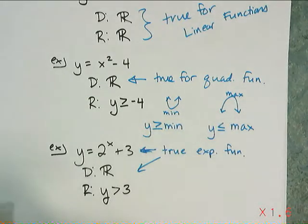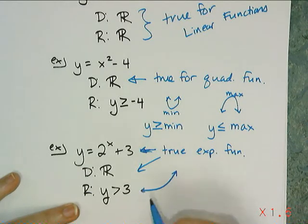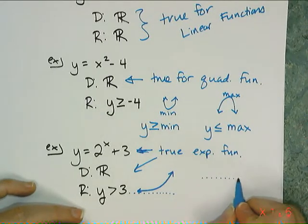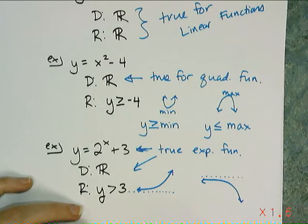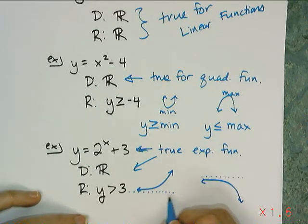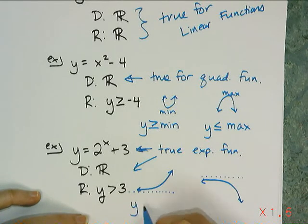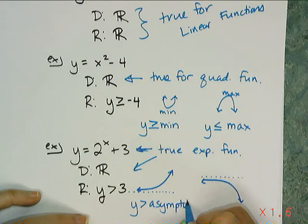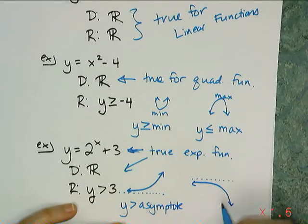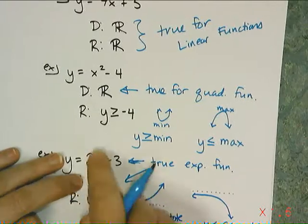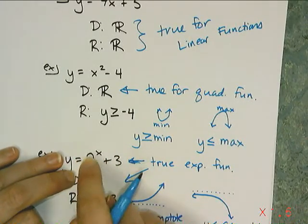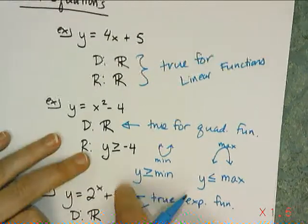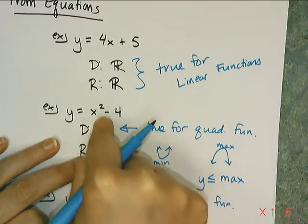There are two types of exponentials. One type has the asymptote at the bottom — those have range y strictly greater than the asymptote value. The other type has the asymptote at the top — those have range y strictly less than the asymptote. The exponentials are always exclusive because you can never get the base term to actually equal 0. For quadratics, the endpoint is included because you totally can make x squared equal 0.